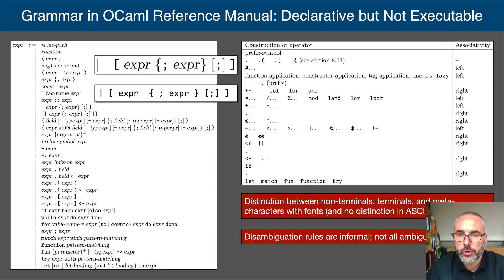Second, the disambiguation rules are informal and defined using tables such as these. What is more, not all ambiguities in the grammar are addressed by these tables.